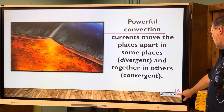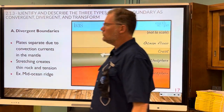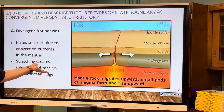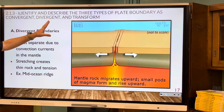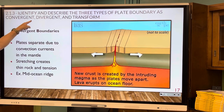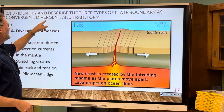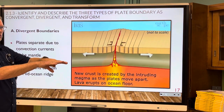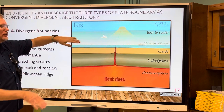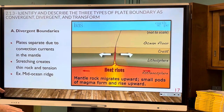Now we're talking about where these plates meet — called plate boundaries — and there are three different kinds: convergent, meaning to come together; divergent, meaning to come apart; and transform, meaning to slide past one another.